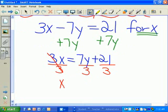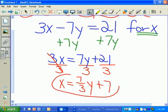Those will cancel. x equals seven-thirds y plus 7. We've just solved this literal equation for x.